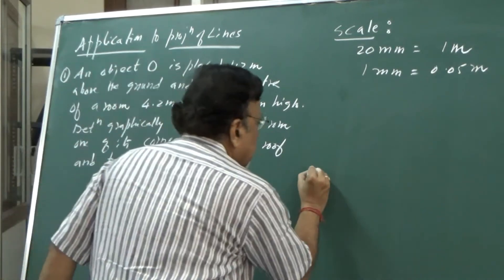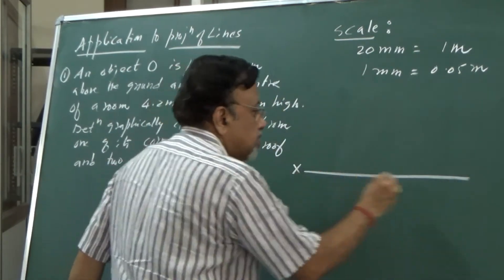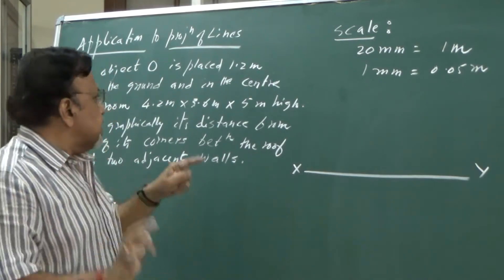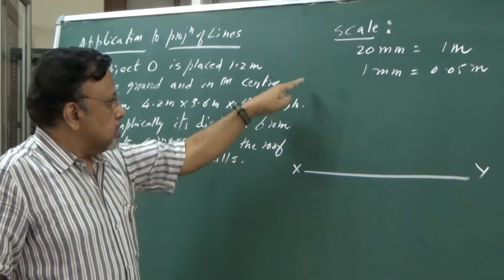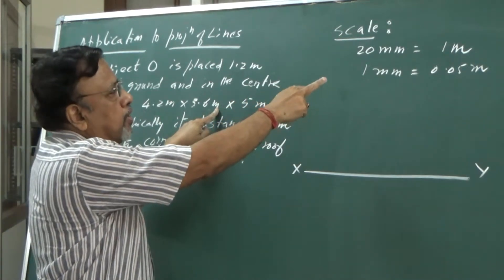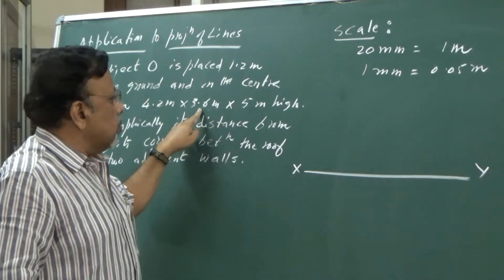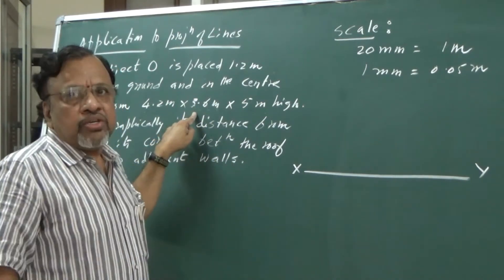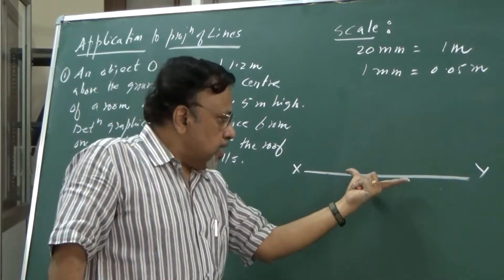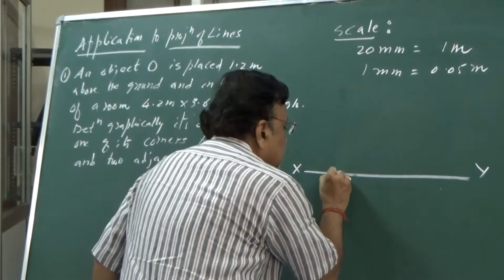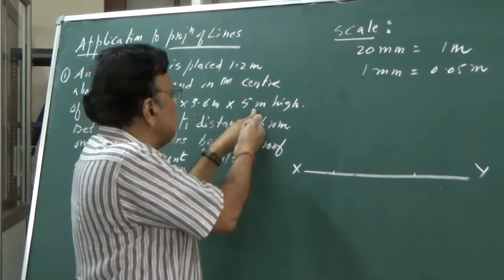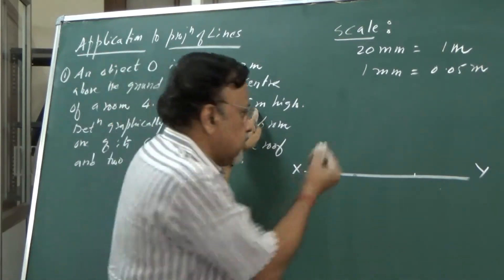I will draw the XY line and draw the front view of the room. I have taken breadth as 3.6 meters. Since the scale is 1mm equals 0.05 meters, 3.6 meters divided by 0.05 gives 72mm. So I will take 72mm as the breadth of this particular room. For height, 5 meters gives 100mm. So the front view rectangle is 72mm wide and 100mm tall.